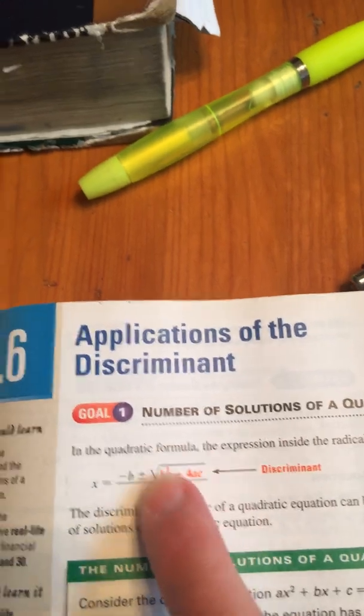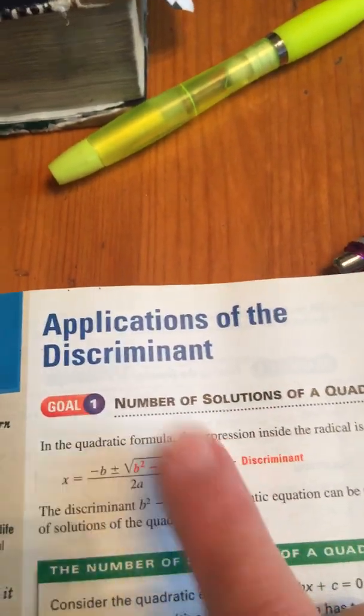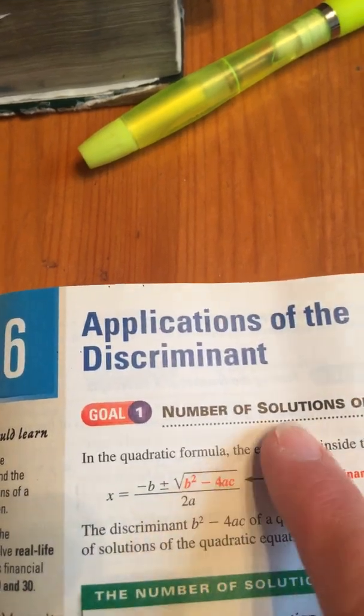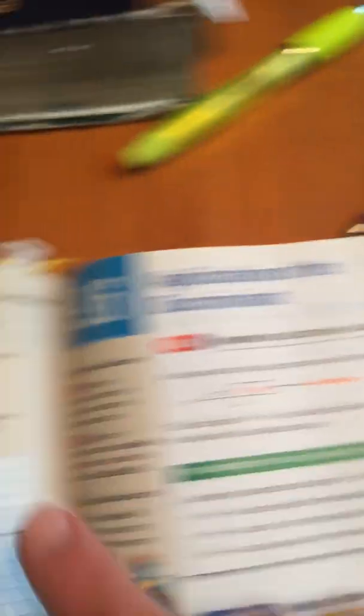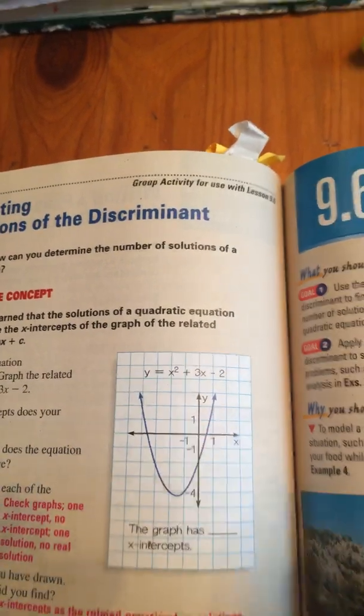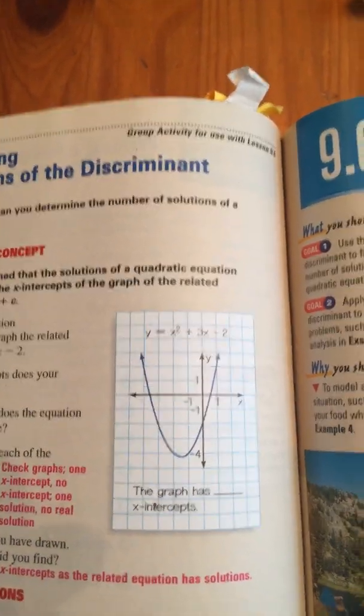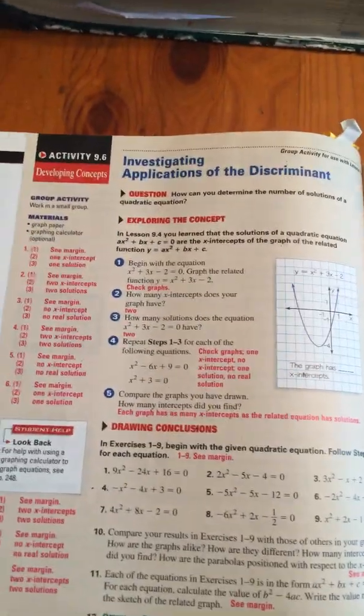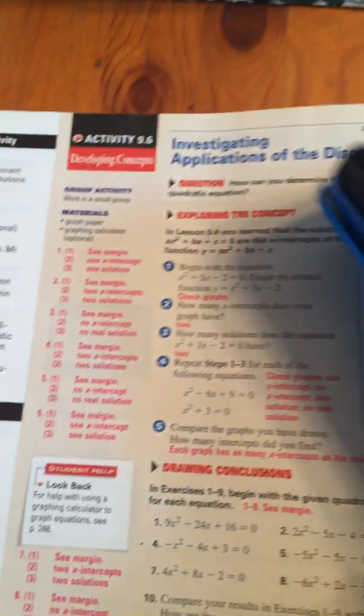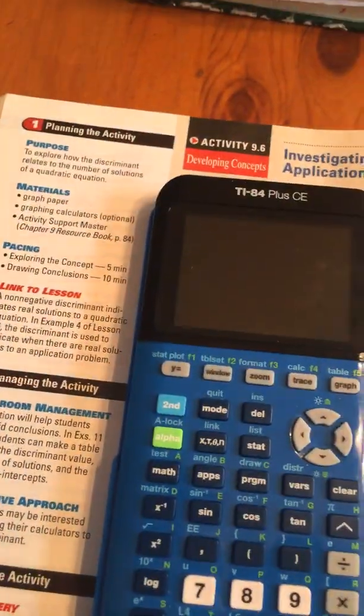That happens when the discriminant is zero. If the discriminant is zero, you get only one solution. If the discriminant is a positive number, then you'll get two solutions like here. See how our parabola crosses in two places? That means there's two solutions or two answers.